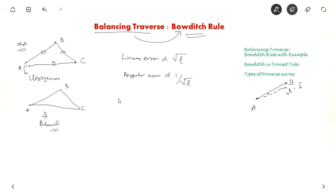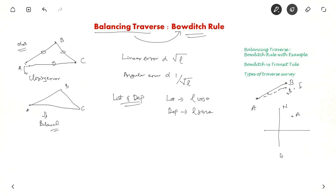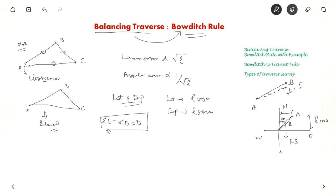Corrections will be applied to the latitude and departure of each line. Latitude is L cos theta and departure is L sin theta. Suppose you have a point A with the reference meridian north-south and east-west — latitude is parallel to the reference meridian, L cos theta, and departure is L sin theta. Corrections are applied to each latitude and departure so that when you sum up the latitudes or sum up the departures, they should both be equal to zero. Then only is the traverse balanced.